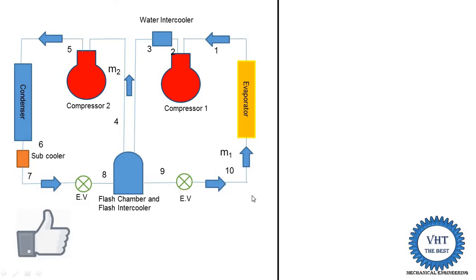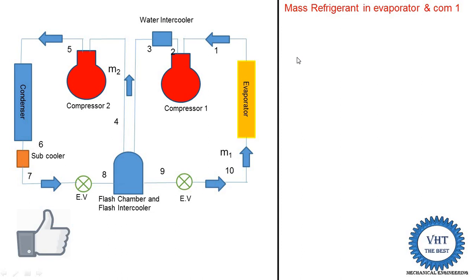When solving an example, you are given evaporator temperature, condenser temperature or pressure, intermediate compressor temperature and pressure, temperature of refrigerant after water intercooler, and refrigerating effect. You are asked to find M1, M2, work done, and COP. First we find the mass of refrigerant in the evaporator, M1. The refrigerating effect equals M1 times the enthalpy difference at the evaporator: RE1 = M1 × (H1 − H10). From this equation we find M1.